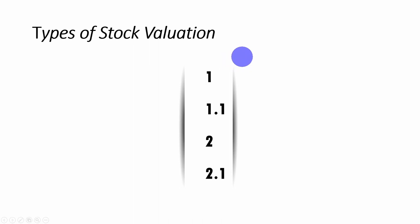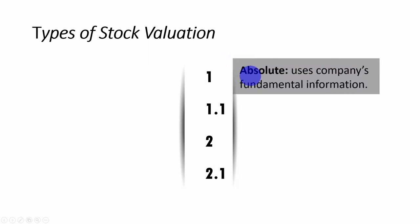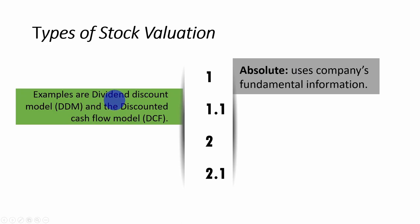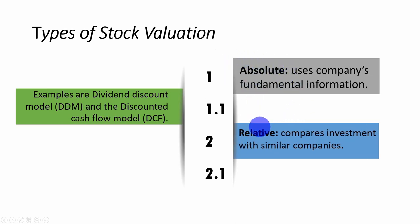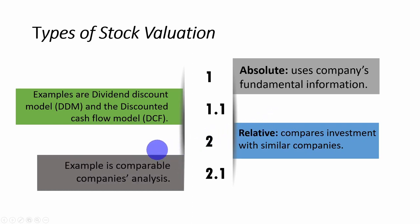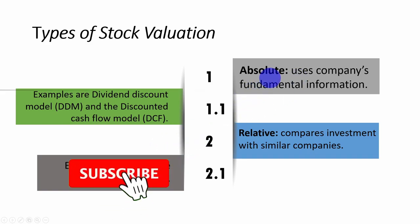Let's look at the types of stock valuation. Basically, we have two types. The first is absolute stock valuation, which uses the company's fundamental information — information provided in the company books. Examples are the dividend discount model and the discounted cash flow model. The second type is relative stock valuation, which relates the investment with investments in other similar companies and compares them. An example is the comparative company analysis.